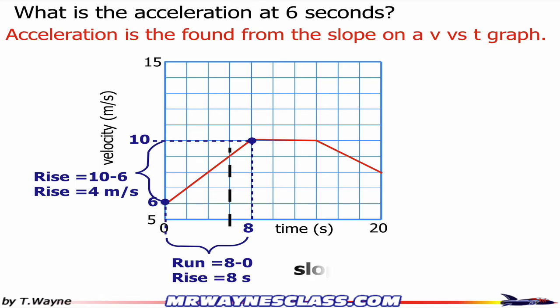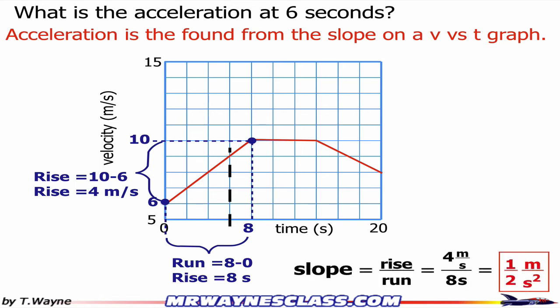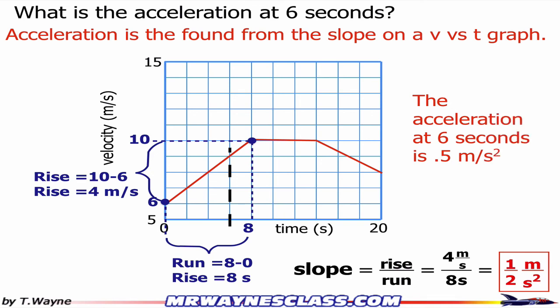So the slope is rise over run — that's 4 meters per second over 8 seconds. A meter per second over second is meters per second squared, so the answer is one half of a meter per second squared. In other words, the acceleration at 6 seconds is one half meter per second squared.